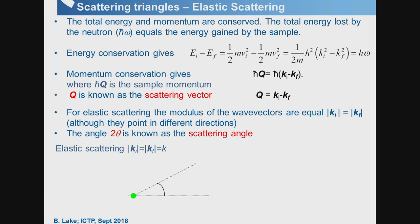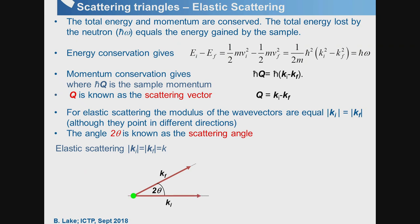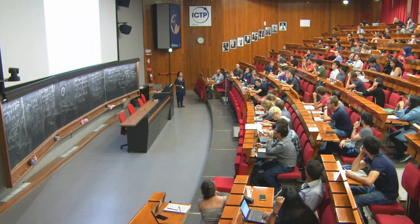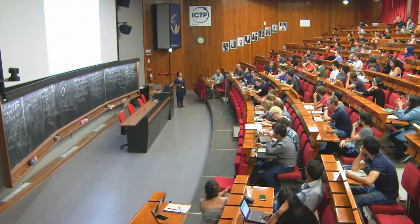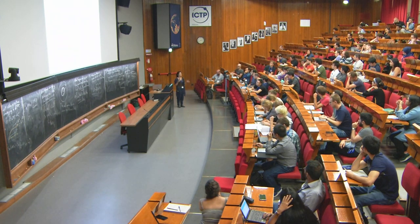For elastic scattering, Ei = Ef, so ℏω = 0 and |ki| = |kf|. This can be represented by the scattering triangle: initial neutrons arriving at the sample are scattered at angle 2θ. Since it's elastic, the lengths of ki and kf are equal but their directions differ. Rearranging the vector triangle, the difference gives the wave vector Q.